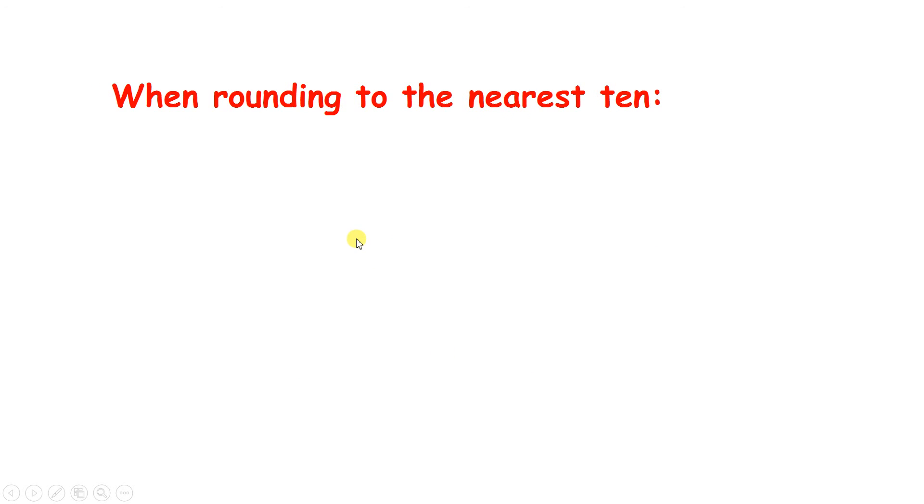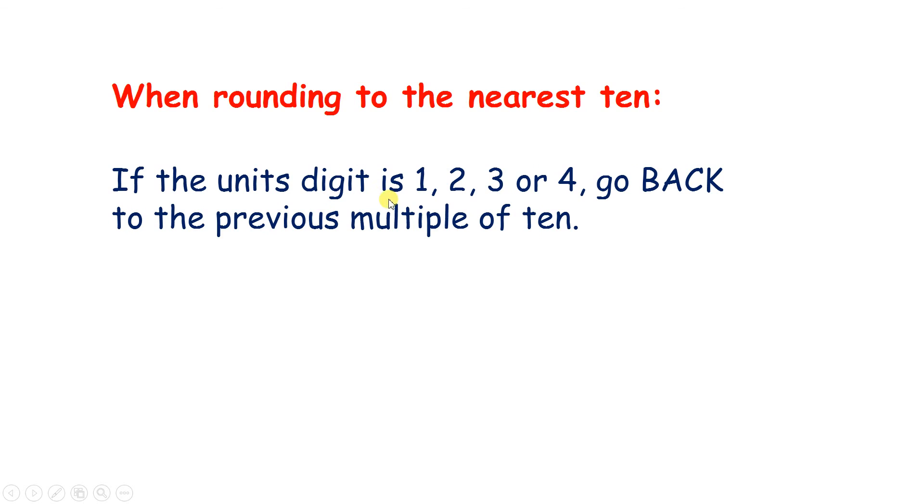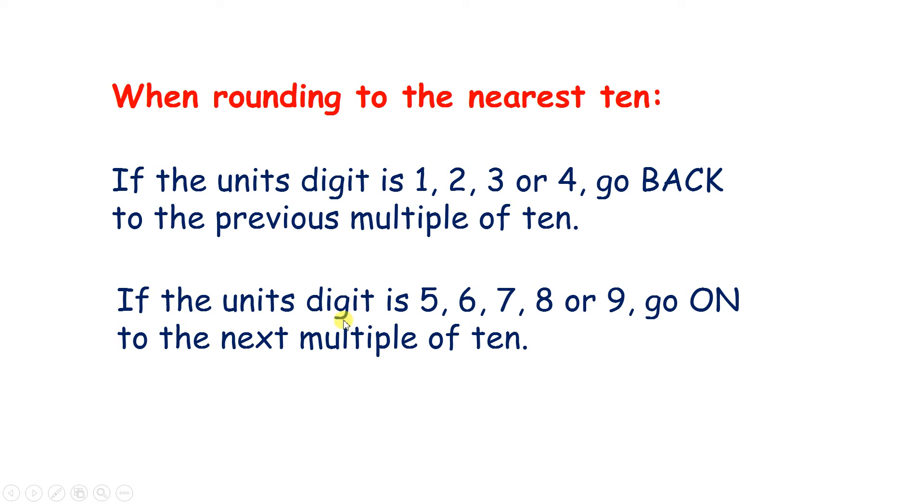So when rounding to the nearest 10, if the units digit is 1, 2, 3, or 4, go back to the previous multiple of 10, and if the units digit is 5, 6, 7, 8, or 9, go on to the next multiple of 10.